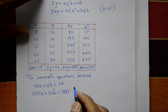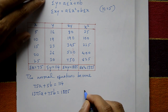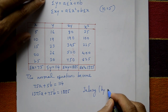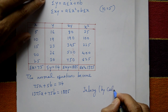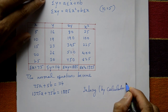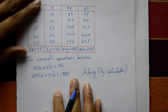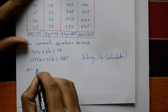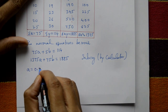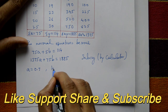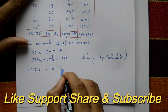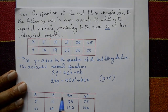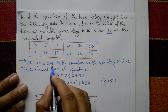Solving these equations using a calculator gives a = 0.7 and b = 12.3. Substituting a and b into the equation gives the best fitting straight line.